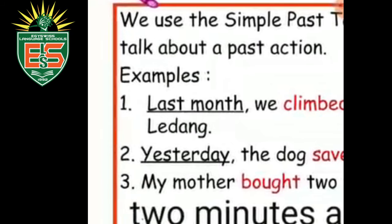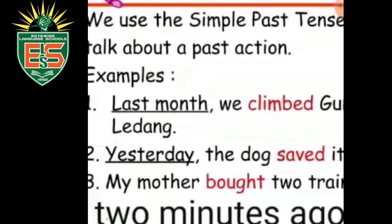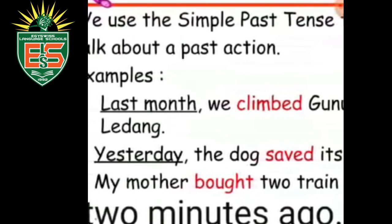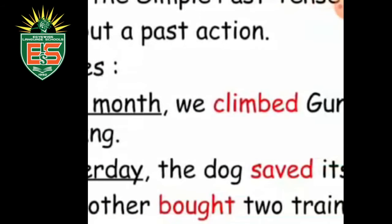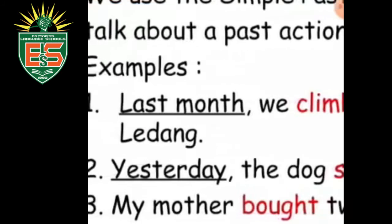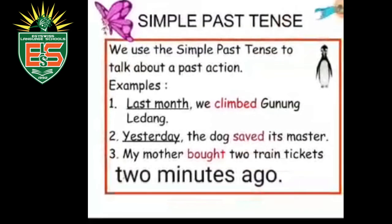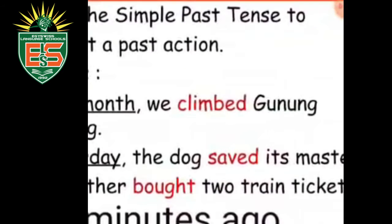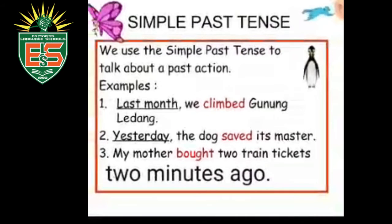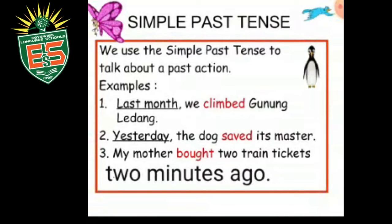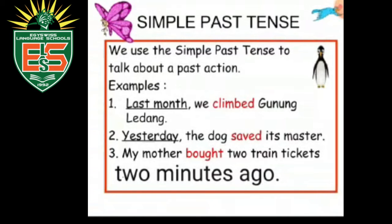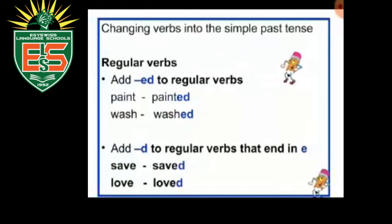Look at these examples. 'Last month we climbed Gunung Gilang' — by the way, Gunung Gilang is a mountain in Malaysia. 'Last' in the sentence means the verb will be in the past, like 'climbed'. 'The dog saved its master yesterday.' 'Yesterday' is a keyword so the verb is in the past: 'saved'. 'My mother bought two train tickets two minutes ago.' 'Ago' is a keyword, so the verb is in the past: 'bought'.